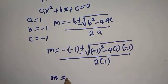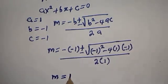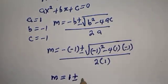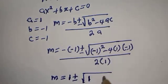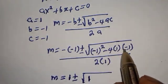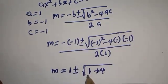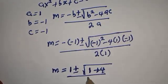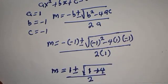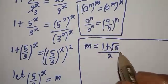m is equal to minus times minus 1, that is plus 1, plus or minus square root of minus 1 squared, that is 1, minus 4 times 1 times minus 1, that is plus 4, all over 2. So m is equal to 1 plus or minus square root of 5, over 2.